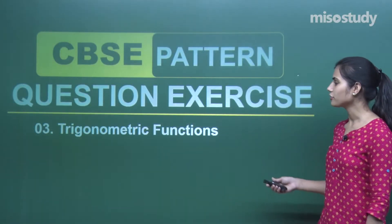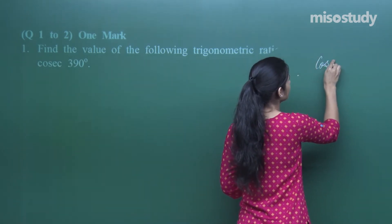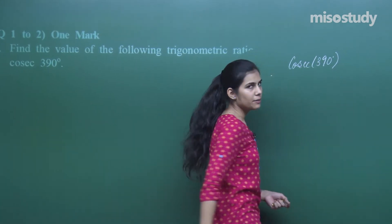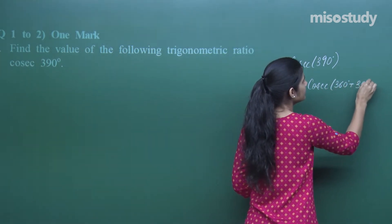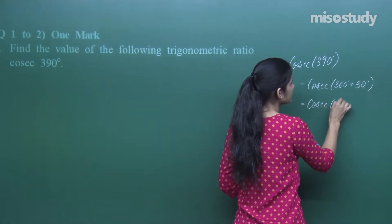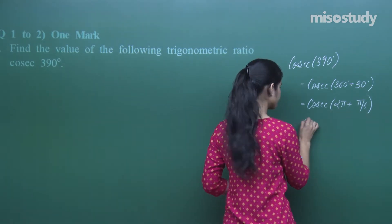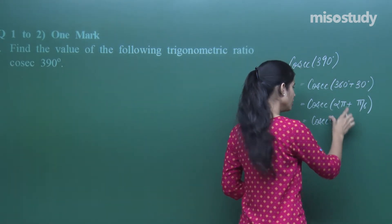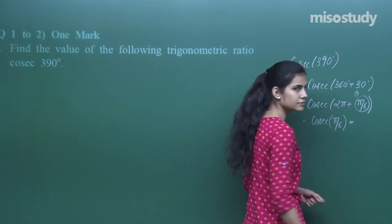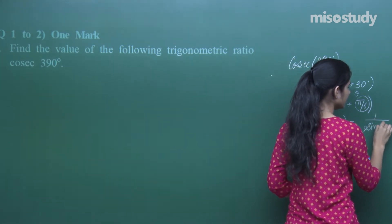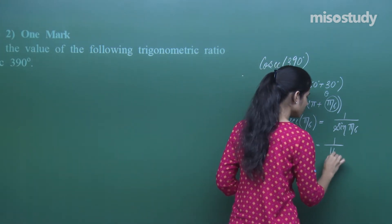Let's talk about the questions on trigonometric functions. Find the value of cosec 390 degrees. To solve this, break it up using allied angles — the closest is 360, so write it as 360 plus 30. In radians, that's 2π plus π/6. Since cosec(2π + θ) = cosec θ, and cosec θ = 1/sin θ, we use sin(π/6) = sin 30 = 1/2, giving the answer as 2.